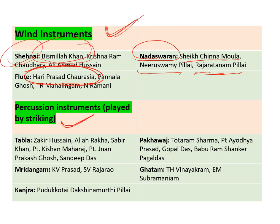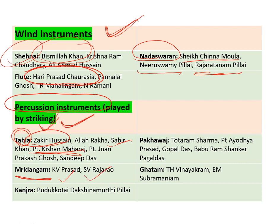Last are percussion instruments — those you play by striking with your hands. These are called percussion instruments. Under tabla, the most important name is Zakir Hussain, then Sabir Khan and Pandit Kishan Maharaj — also very important. Mridangam: K.V. Prasad and S.V. Raja Rao — both names very important. Kanjra: Puddu Kutai. Pakhwaj: Tota Ram Sharma, Pandit Ayodhya Prashad, Babu Ramshankar, Pagaldas. Ghatam: E.M. Subramaniam — a very important name.